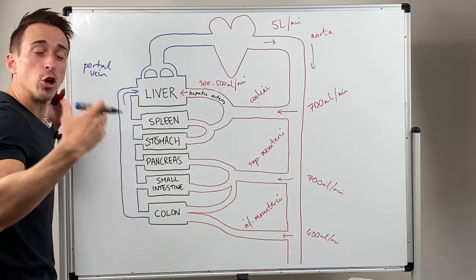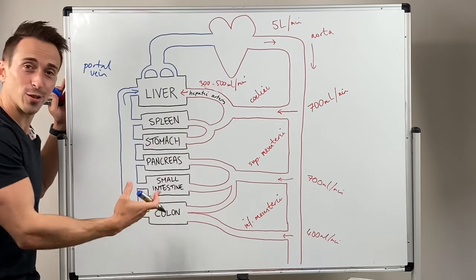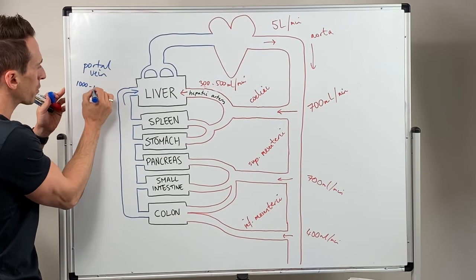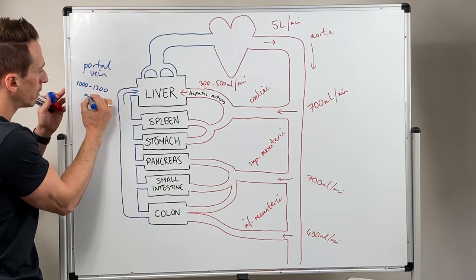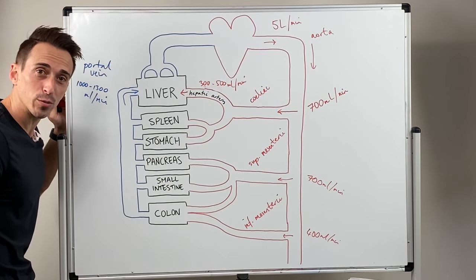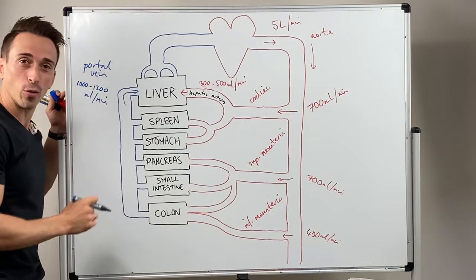Which is delivering nutrient rich but oxygen poor blood from all of these digestive structures. And it's actually bringing in around about 1000 to 1300 mils per minute. So compare that to the 300 to 500 mils per minute. Most of the blood that's going to the liver is actually coming from the portal vein.